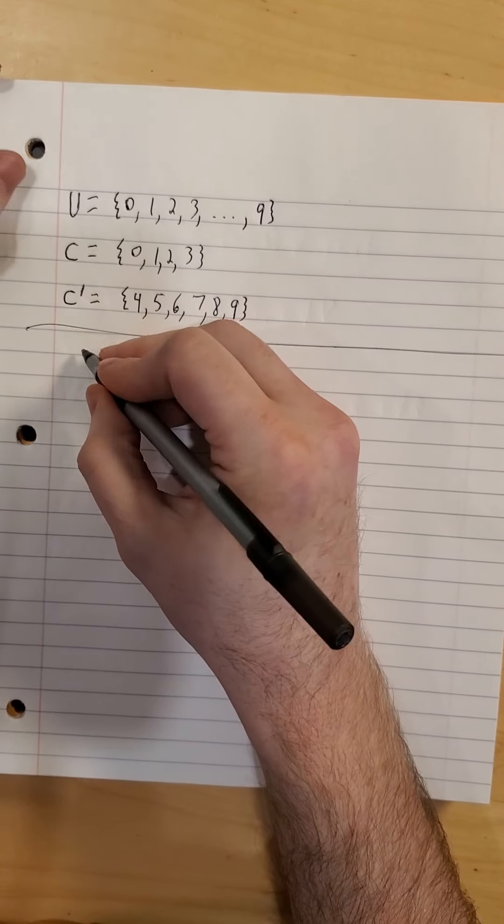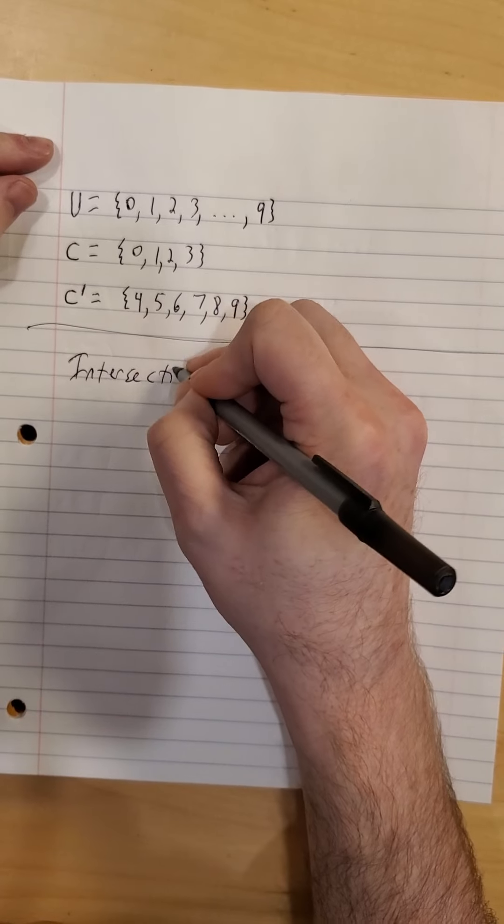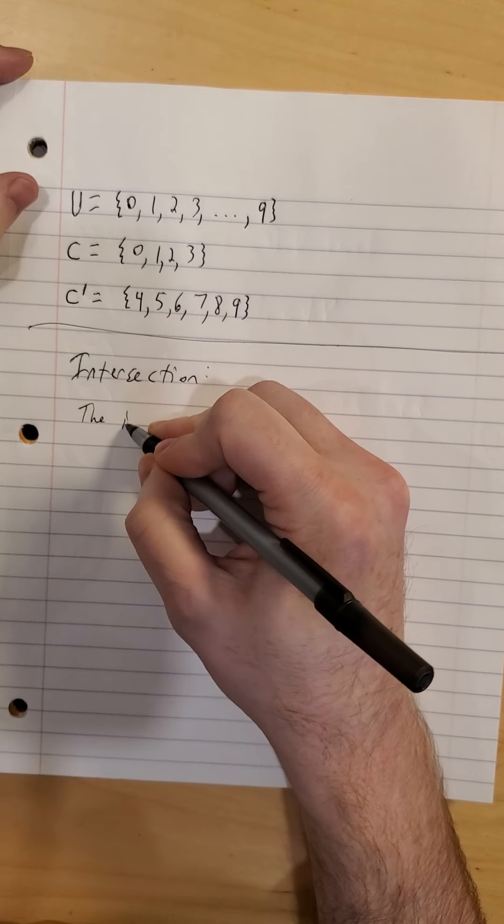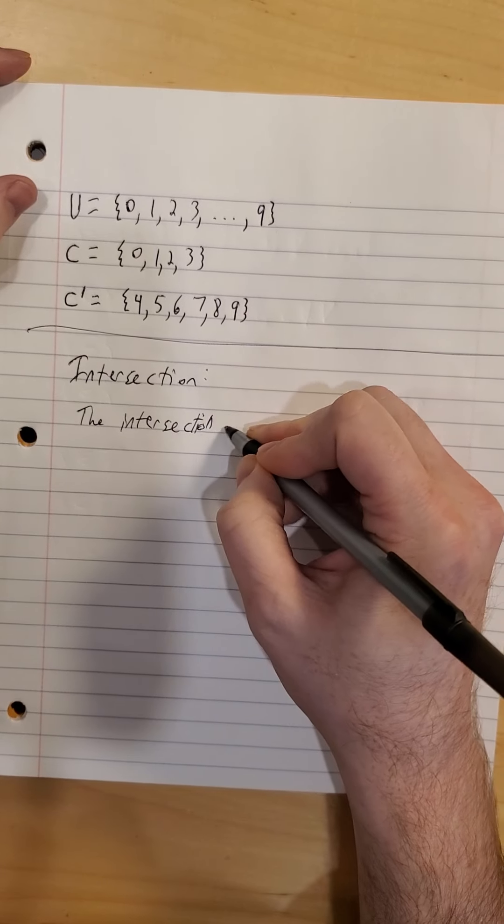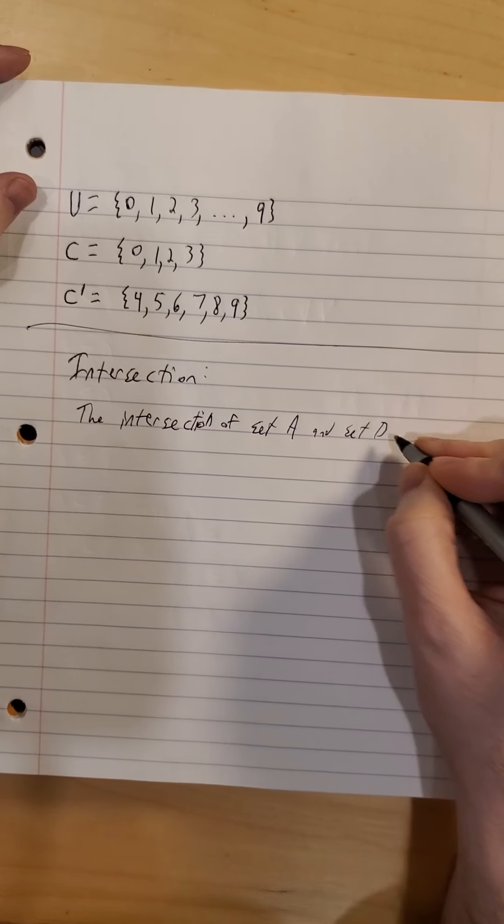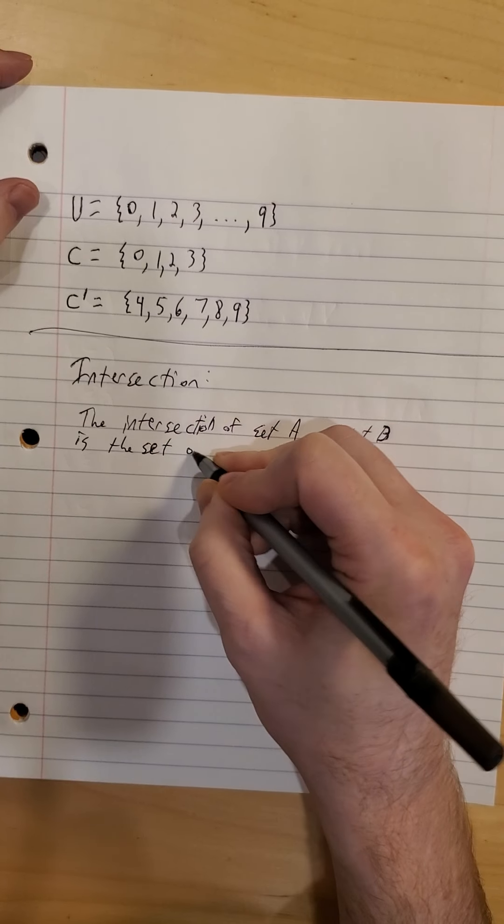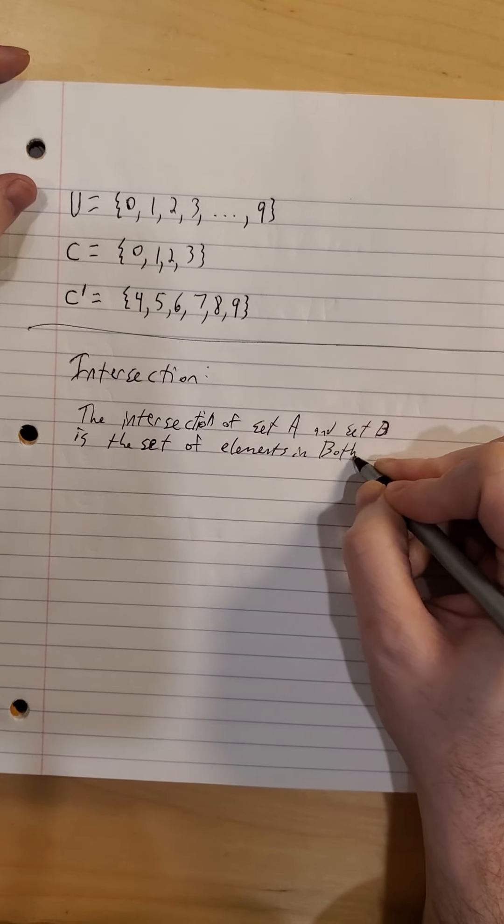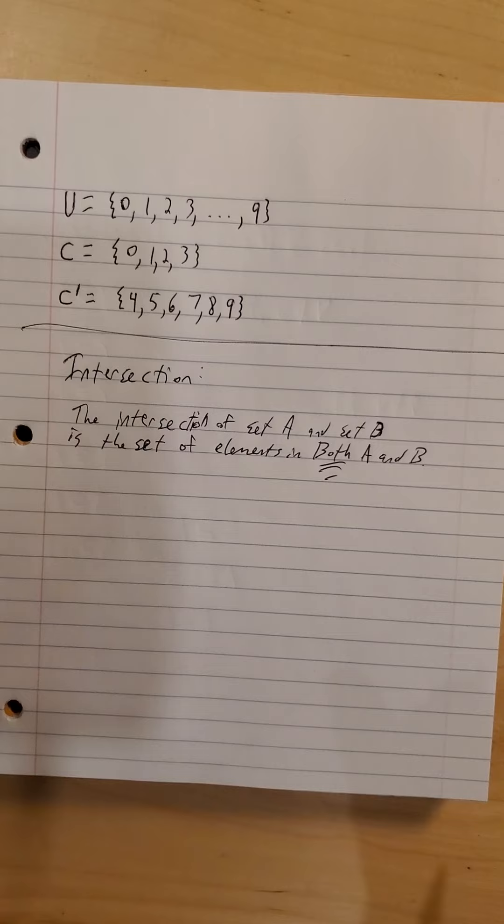All right, so next we look at the intersection of sets. So the intersection of set A and set B is the set, so it is another set. It has to be in both A and B. So each element is in both A and B.